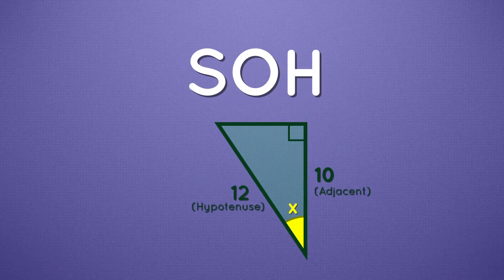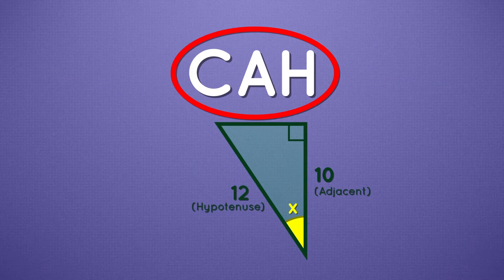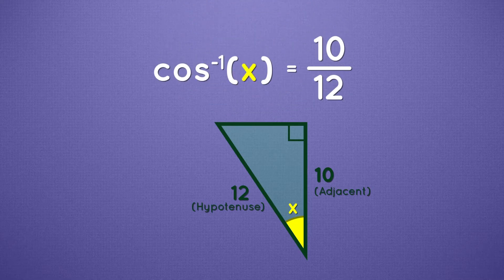Now we look to SOHCAHTOA. Hypotenuse and adjacent. We can use cosine. So the cosine of x is equal to 10 over 12.